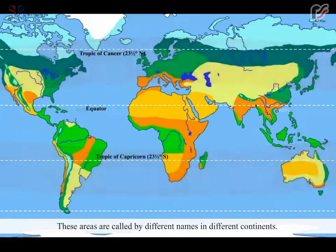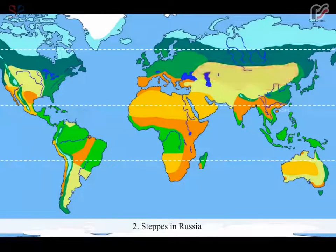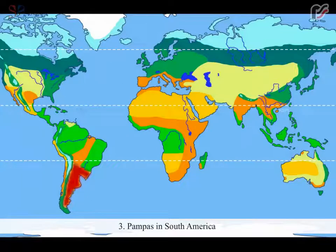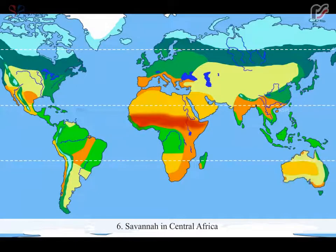These areas are called by different names in different continents: Prairies in North America, Steppes in Russia, Pampas in South America, Velds in South Africa, Downs in Australia, and Savannah in Central Africa.